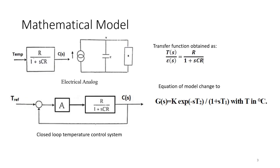Moving on to the mathematical model — the first step in the analysis of any control system is to derive the mathematical model. We obtain the transfer function as T(s)/ε(f) = R / (1 + sτ), which is a first-order type-0 system. Such a system should be easily controlled in closed-loop. The input is in the form of heat and the output is the final temperature. Since the output is obtained only after a delay, the model changes to G(s) = K·e^(−sT2) / (1 + sT1), where T1 is the time constant and T2 is the delay.